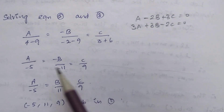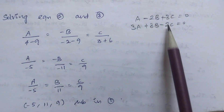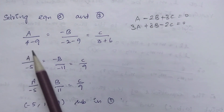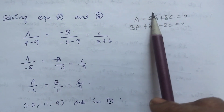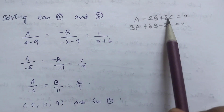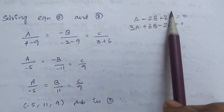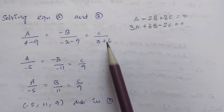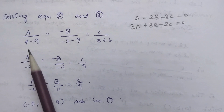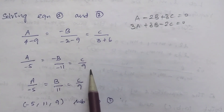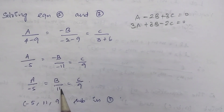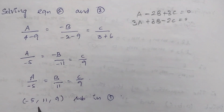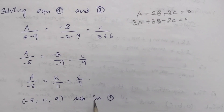We solve equations 2 and 3 using the cross-ratio method. A/(4-9) = -B/(-2-9) = C/(3+6), which simplifies to A/(-5) = B/11 = C/9. So the direction ratios are -5, 11, 9. Substitute these values into equation 1.